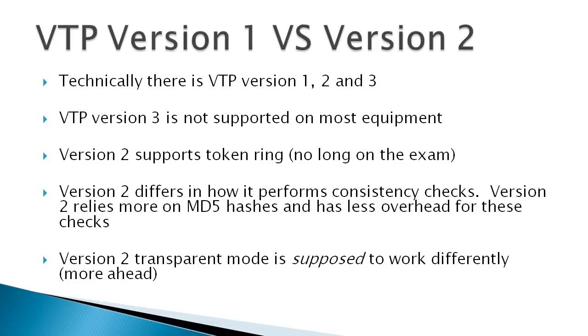With VTP version 2, it's a bit more efficient because it relies more on MD5 hashes of the information instead of rechecking everything like VTP version 1 does. Also in version 2, transparent mode is supposed to work a little bit differently — we're going to talk about myth versus truth on that in a second.